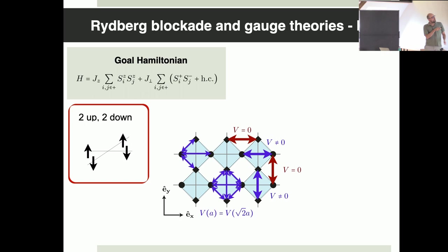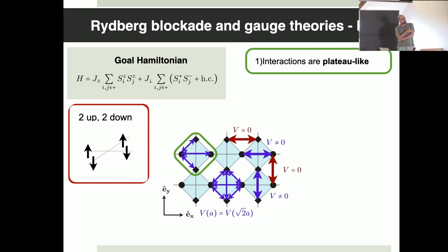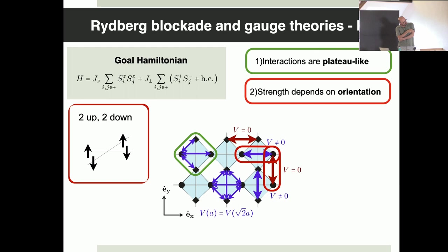People have tried to do that in cold atoms for a long time. The typical strategy is to enforce the constraint by putting a strong energy penalty for all states that do not satisfy that, then add the dynamics in perturbation theory. In a single plaquette, you first flip two spins, pay an energy cost due to this penalty, then flip the other two spins and come back to a configuration with expectation value of H0 equal to zero.